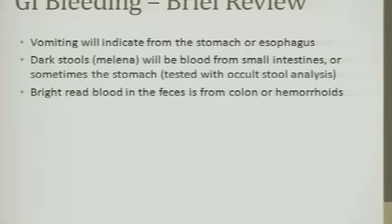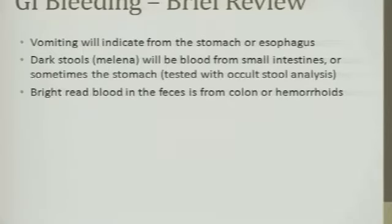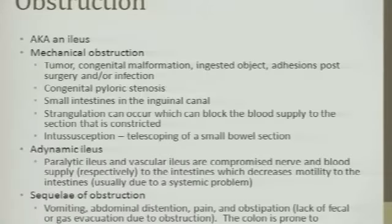GI bleeding — brief review. Blood in the vomit indicates stomach or upper GI bleeding. Dark stools mean blood is coming from higher up in the GI tract. Red blood indicates lower GI tract bleeding — like diverticulitis with rupture, hemorrhoids, or colon cancer. Occult stool analysis is also used. Different types of obstructions can occur: tumors, congenital malformation, ingested objects, and adhesions — especially post-surgical. We like to make adhesions; if the area gets irritated, inflammation deposits fibrous connective tissue.